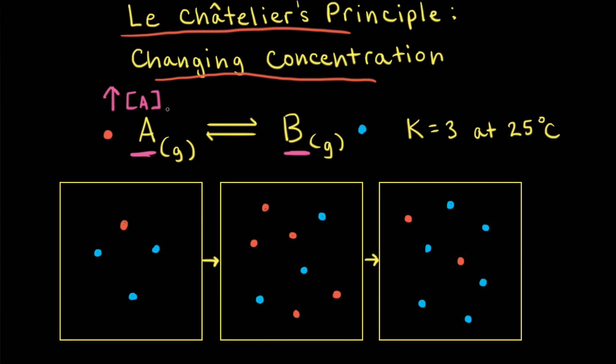According to Le Chatelier's Principle, the net reaction is going to go in the direction that relieves the stress. Since we increased the concentration of A, the net reaction is going to go to the right to decrease the concentration of A.